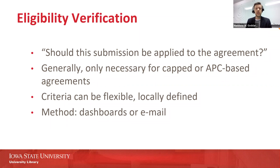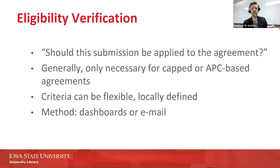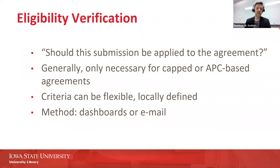It's important for libraries to maintain the ability to say yes or no and to define what criteria they're using. This relates back to the agreement, because some publishers try to specify that libraries will take this verification step. But we want the option to just auto-approve everything if it looks good to the publisher for some agreements, while in other cases we might want more control — for example, if we realize we're going to run out of funds halfway through the year, we might want to narrow the scope of what we're approving.